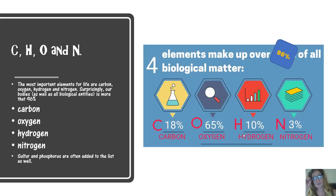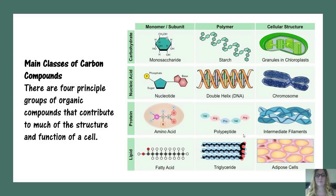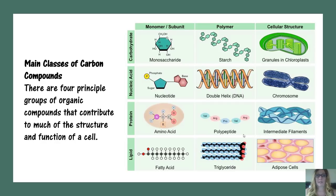About 96% of all living matter is made up of just carbon, oxygen, hydrogen, and nitrogen. Sulfur and phosphorus come in at a very close second. It's amazing that we get such a wide variety of macromolecules and cellular components with so few elements. There are four principal groups of organic compounds that contribute to almost all cell structures: carbohydrates, nucleic acids, proteins, and lipids.